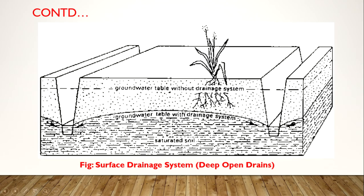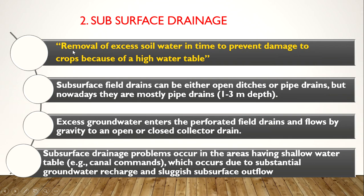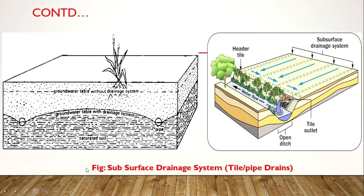Subsurface drainage is the removal of excess soil water below the soil surface in time to prevent crop damage due to a high water table. It can be constructed within a depth of 1 to 3 meters. Problems occur in areas with a shallow water table. A tile drainage system, shown in the figure, uses pipes inserted below the soil — water from the saturated zone enters the pipes and is discharged at outlets such as louvers or streams.